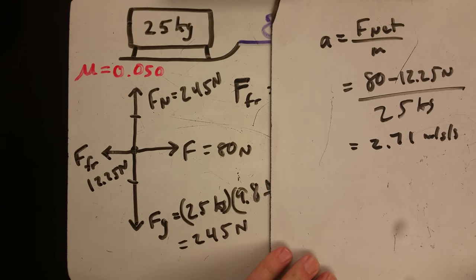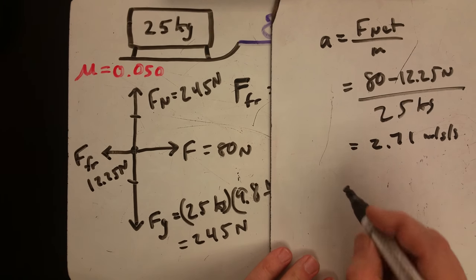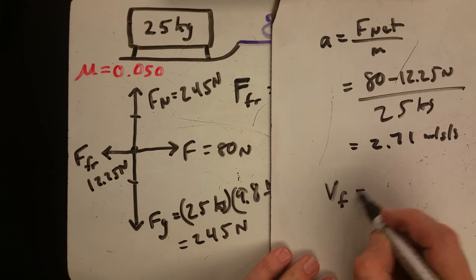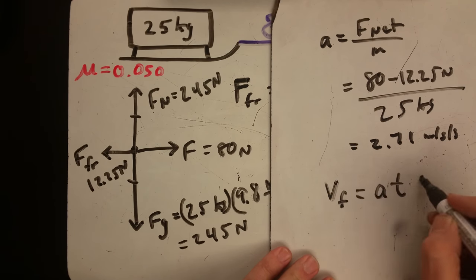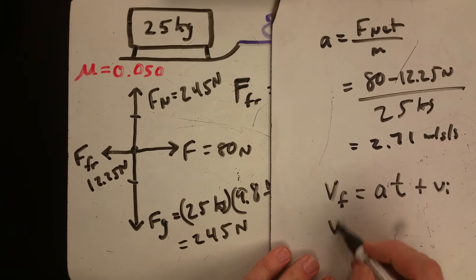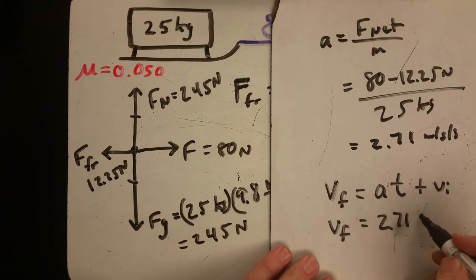So we also know the final velocity equals at plus the initial, or the final equals 2.71 meters per second per second times time is 1.5 seconds plus zero.